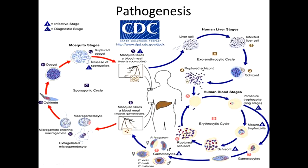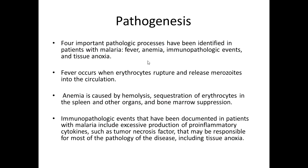The schizont ruptures the erythrocytes and the rigors and chill symptoms occur in the patient. Gametocytes are taken up by the mosquito, and in the gut of the mosquito, the micro gamete enters the macro gamete forming a zygote called ookinete, which then becomes an oocyst released in the saliva of the mosquito when it bites a healthy person again.